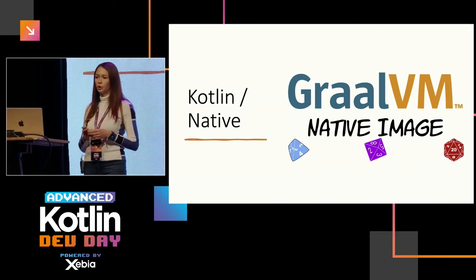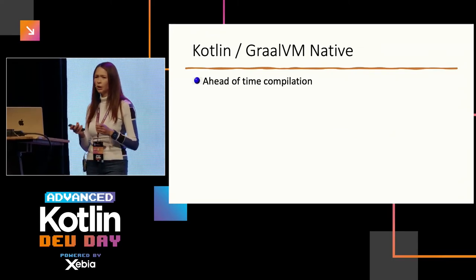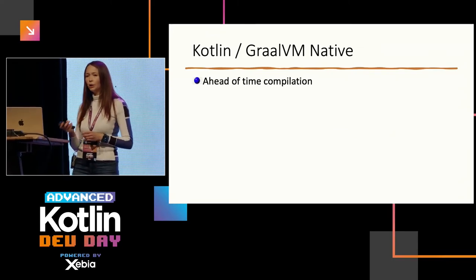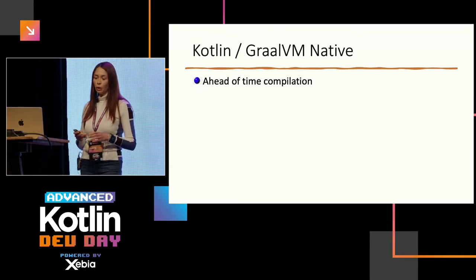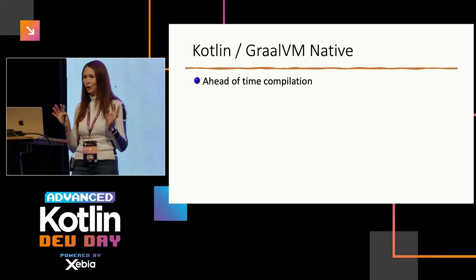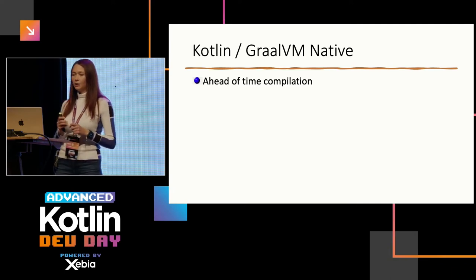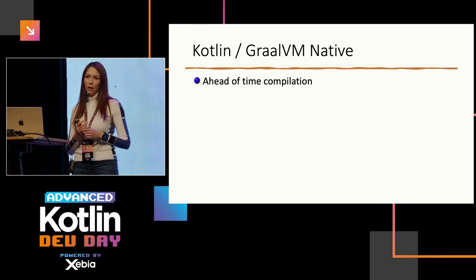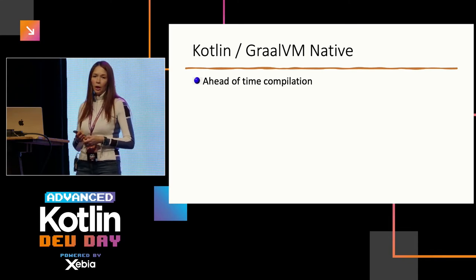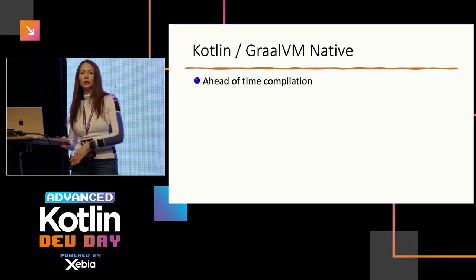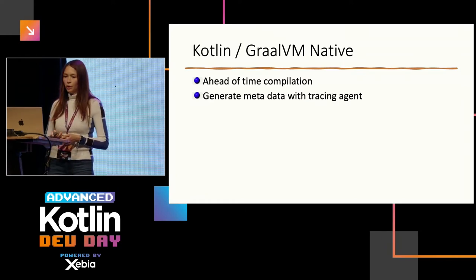What does GraalVM do? It's ahead-of-time compilation instead of just-in-time, which means only reachable code is included — great for security. But it has a side effect: reflection. Libraries that don't natively support GraalVM — reflection parts that you actually use in your code — won't work without some help.